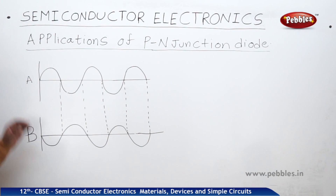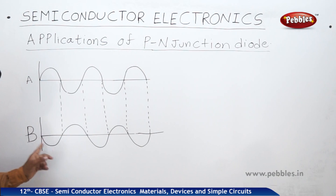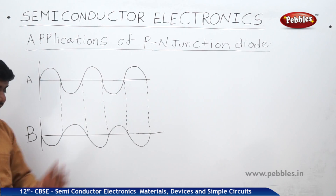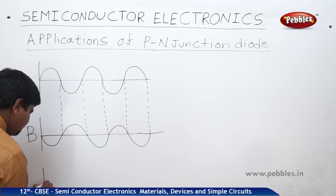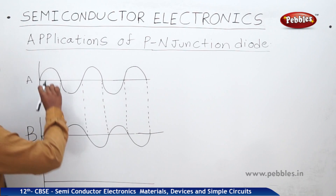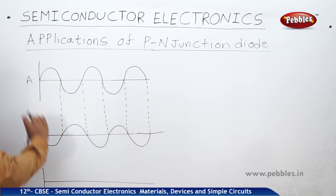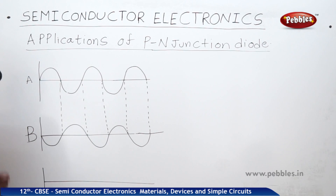So this is the case. Due to A, this is the waveform. Due to B, this is the waveform. Concludingly, what will be the output? When this is in the forward bias, the second gate will be opened to become the reverse bias. So like this, you will get.